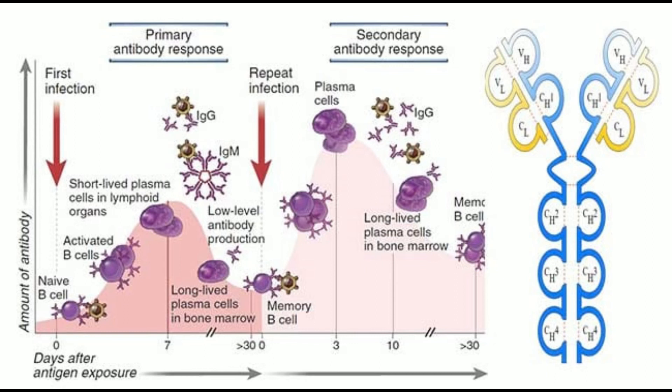Characteristic #11 - Strength of the Response: The primary immune response is usually weaker than the secondary immune response. The secondary immune response is stronger.